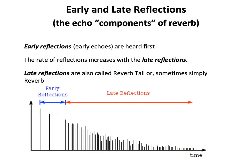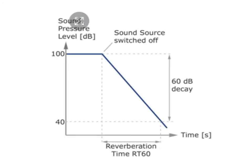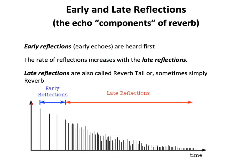Early and late reflections are the echo components of reverb. Early reflections, or early sound, are heard first after the impulse of the direct sound. The rate of reflections increases with the late reflections, which are also known as the reverb tail. You might also see RT60 on a reverb unit or plugin — this stands for reverb time, and the 60 stands for the time it takes for the reverb to decay 60 dB. In the diagram, we see the impulse, followed by early reflections with one or two distinct echoes, then late reflections — random, multiply spaced echoes that are indistinguishable from each other.